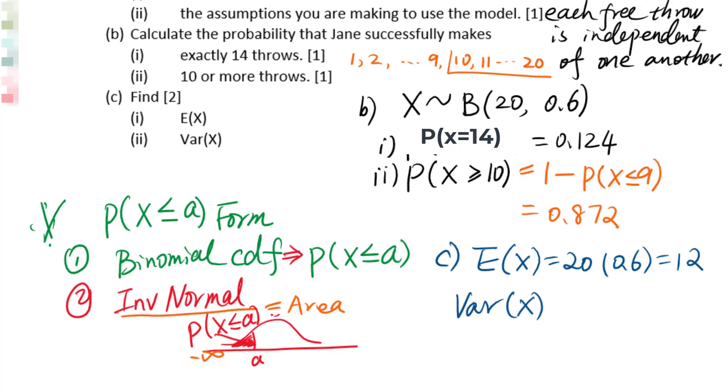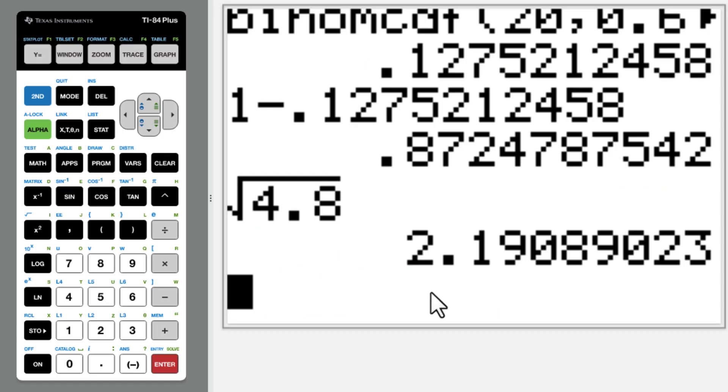Variance of X equals 20 times 0.6 times 1 minus 0.6 equals 4.8. We can get sigma equals square root 4.8 equals 2.19.